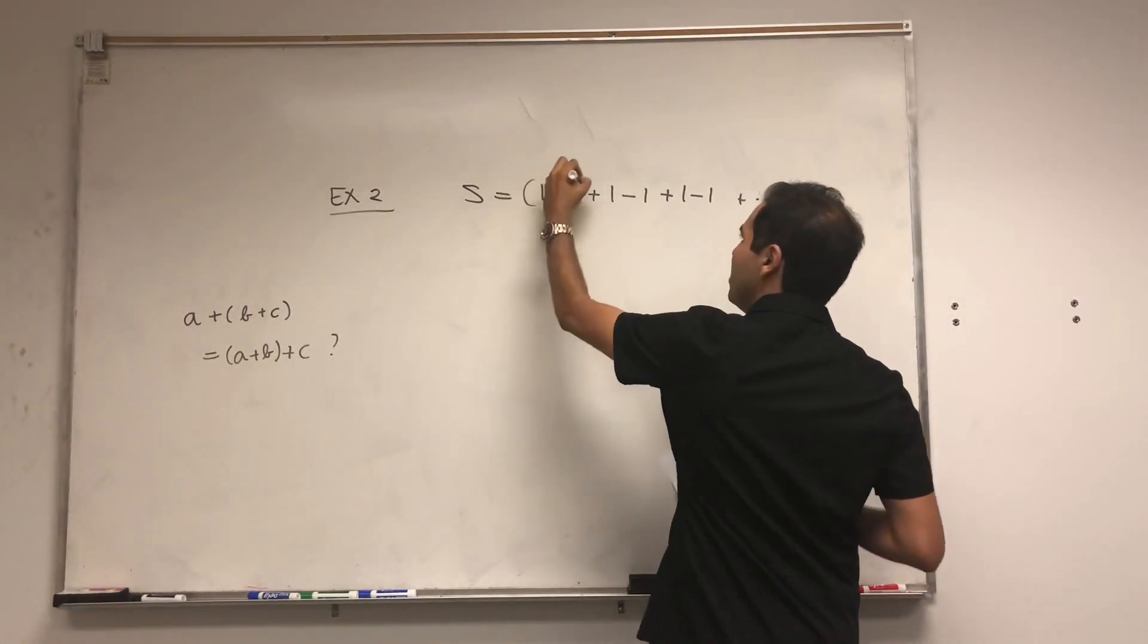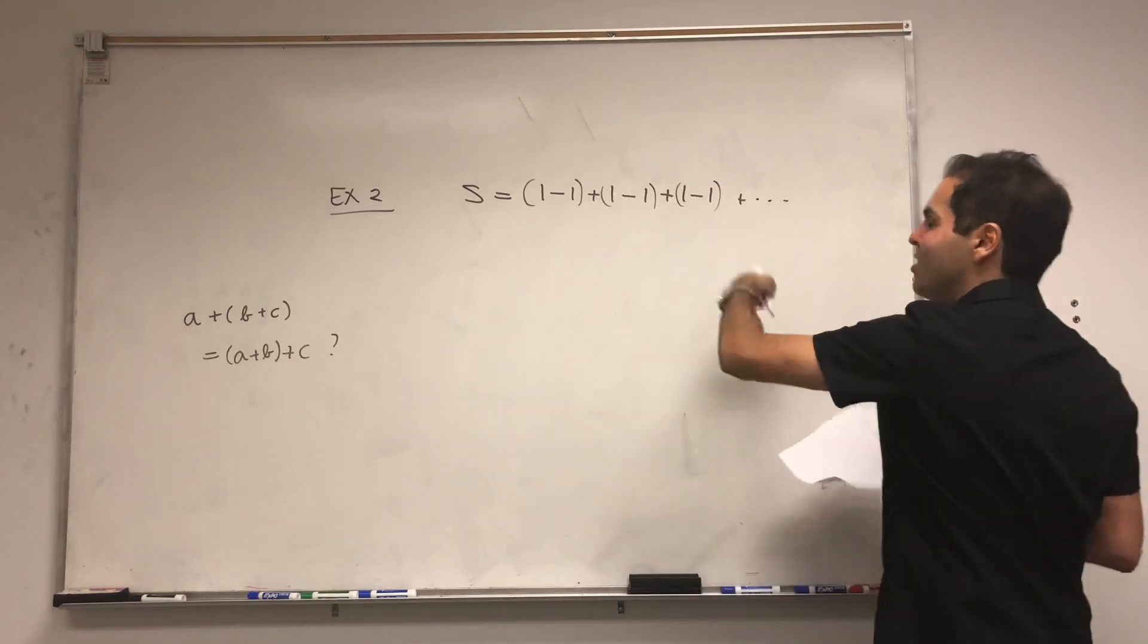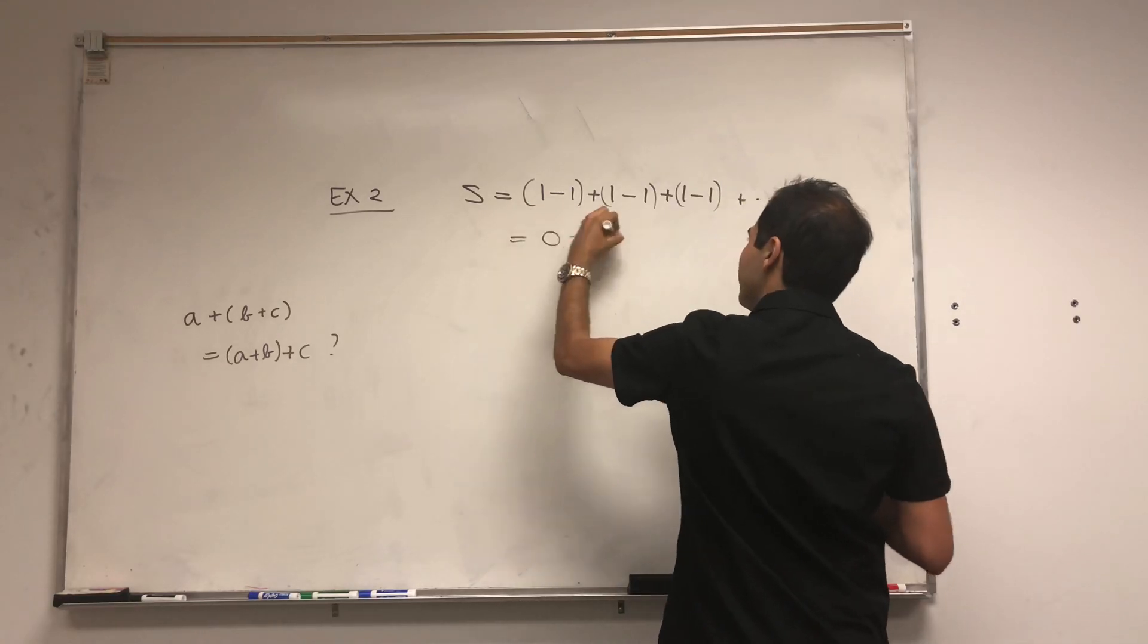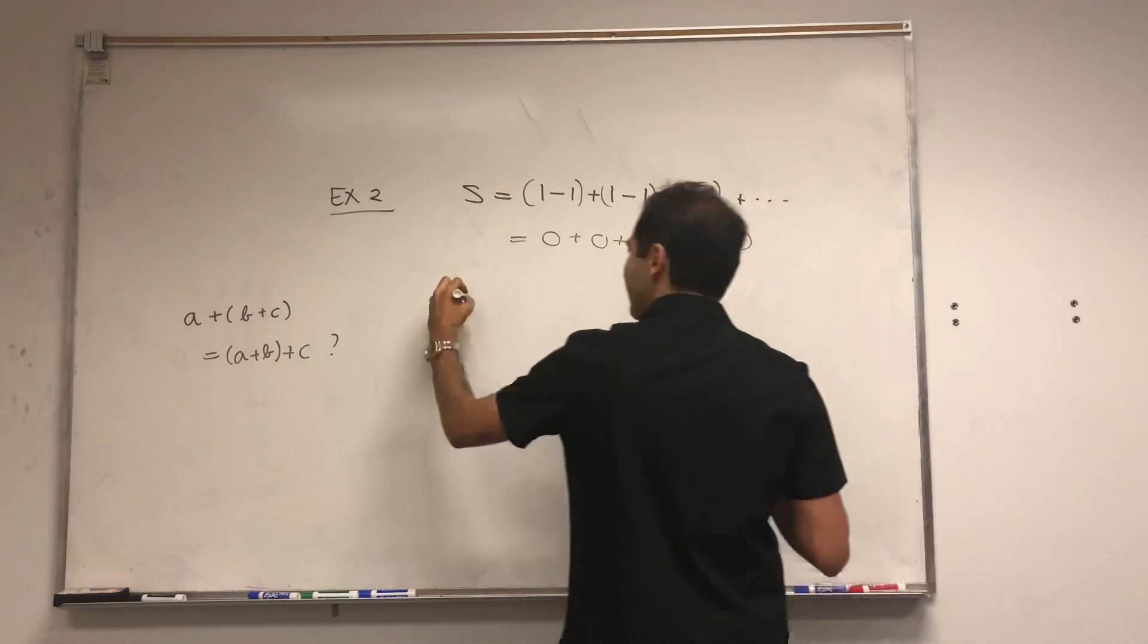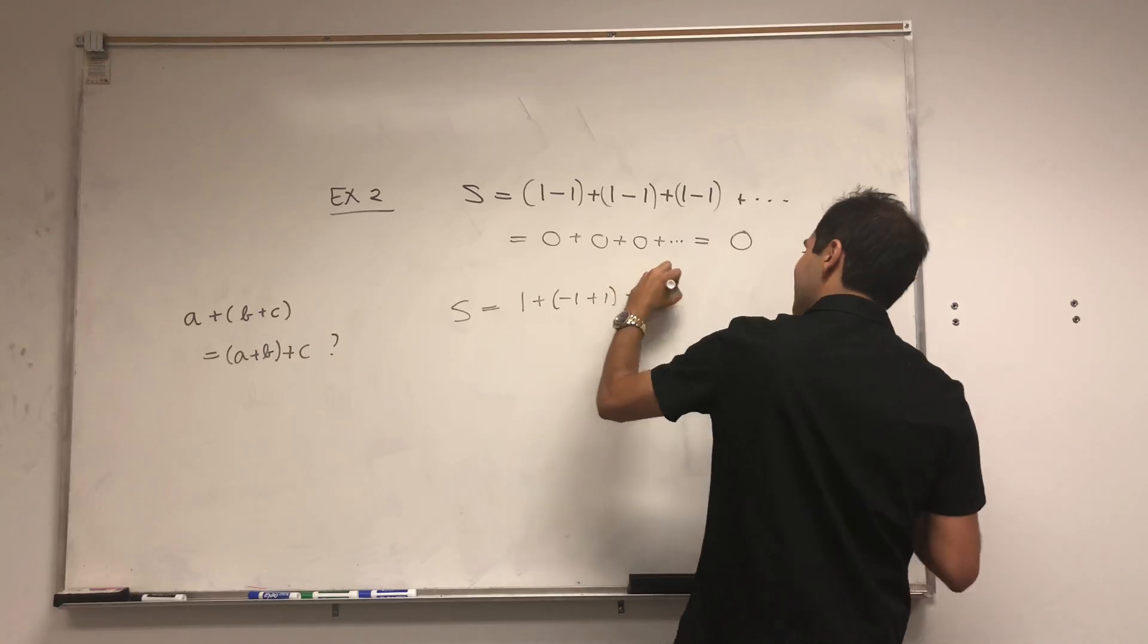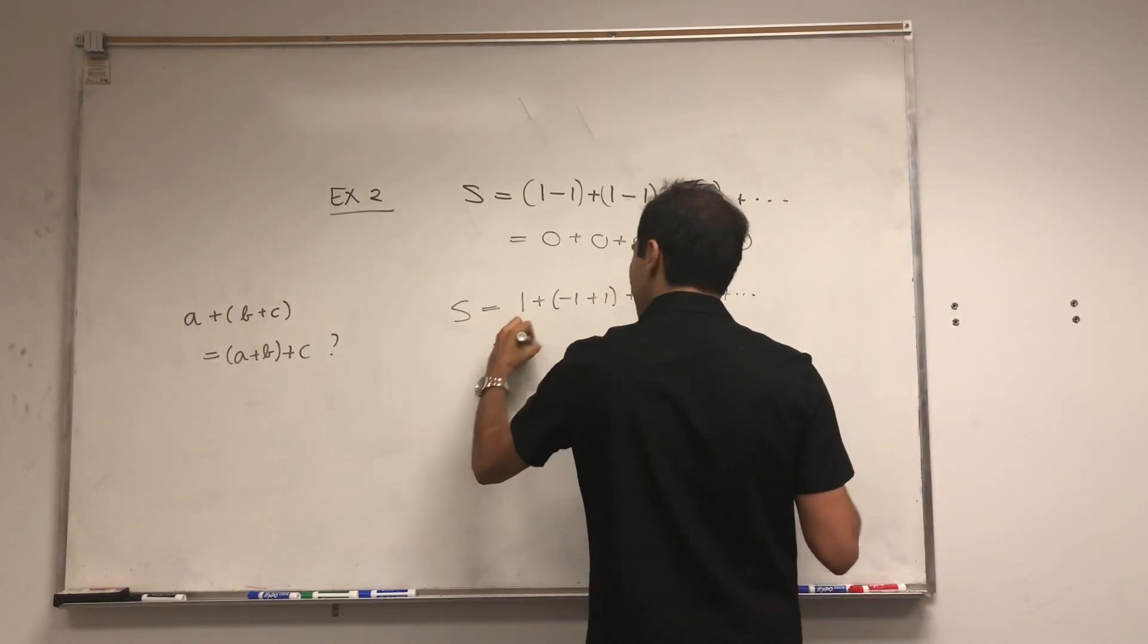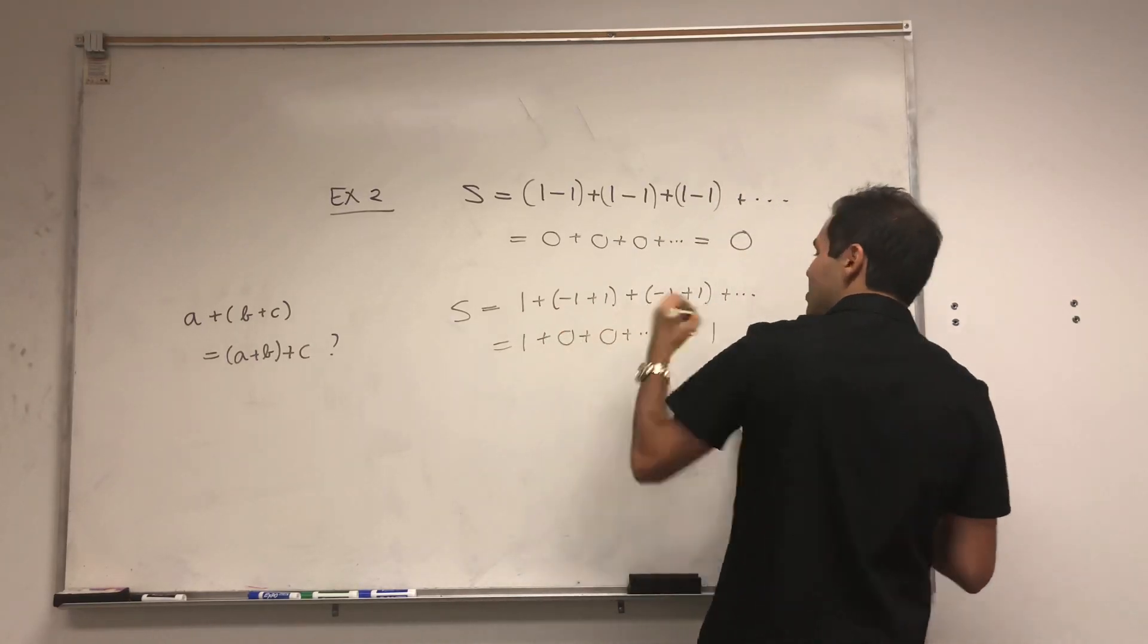Because on the one hand, if it were true, then S would be 1 minus 1 plus 1 minus 1 plus 1 minus 1, which is 0 plus 0 plus 0, which is 0. Well, on the other hand, S could be 1 plus minus 1 plus 1, plus minus 1 plus 1, which would be 1 plus 0 plus 0 plus 0, which is 1.